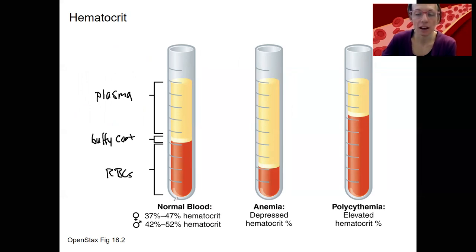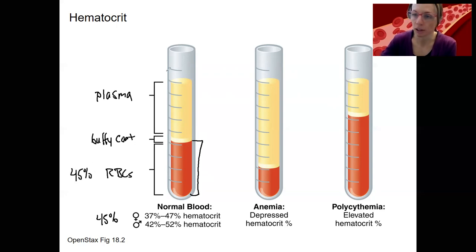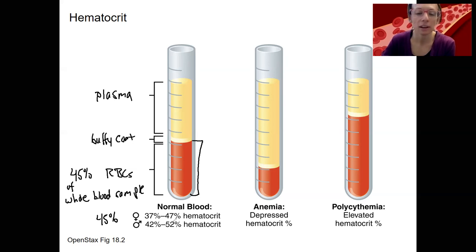Normally, in a healthy individual, the hematocrit will fall within a certain range as a percent of the whole blood sample. Taking 45% as an example — that falls between both female and male ranges — it means red blood cells make up 45% of the entire whole blood sample. There's about 10% variability that's normal, but males do have a slightly higher hematocrit than females.